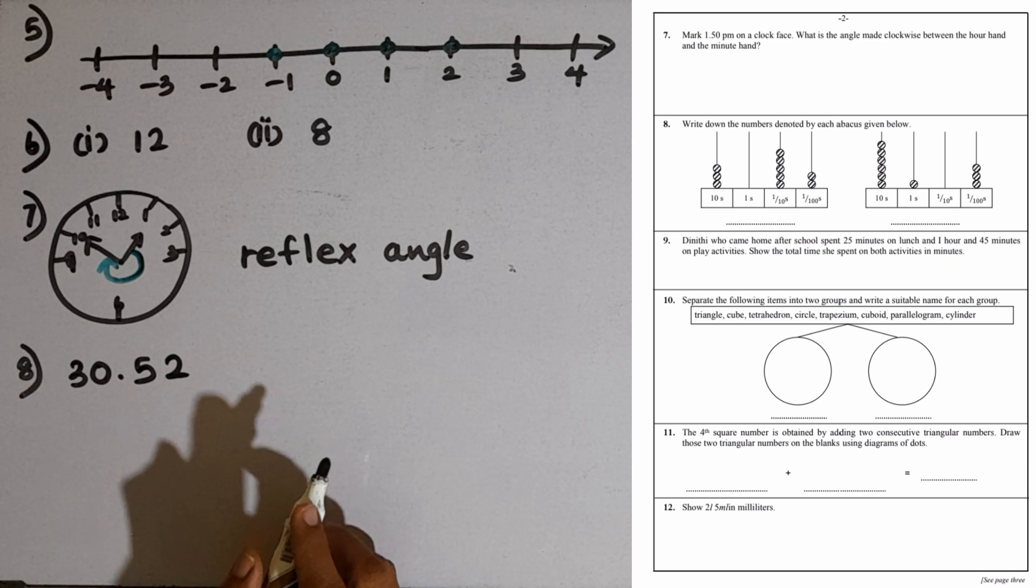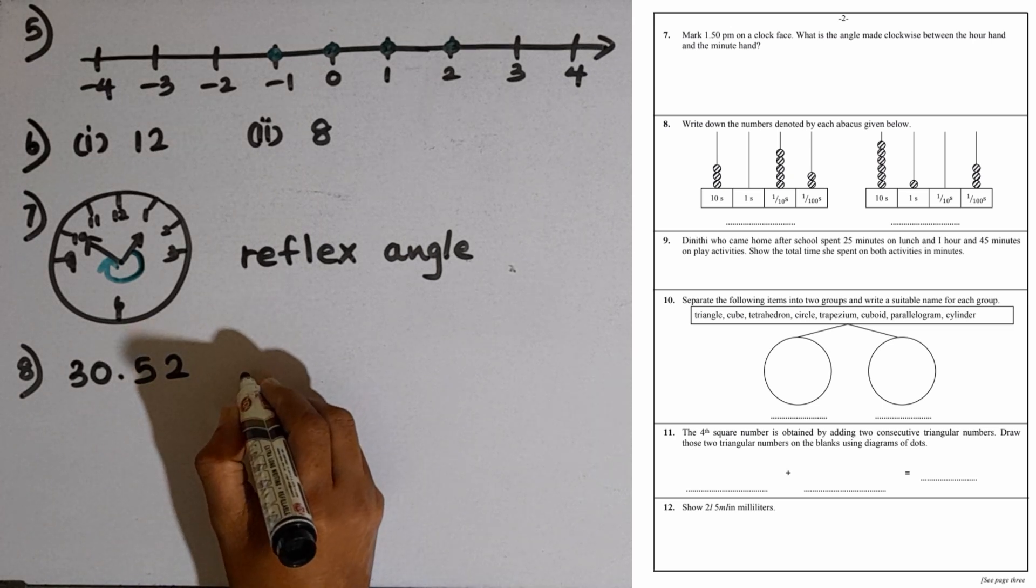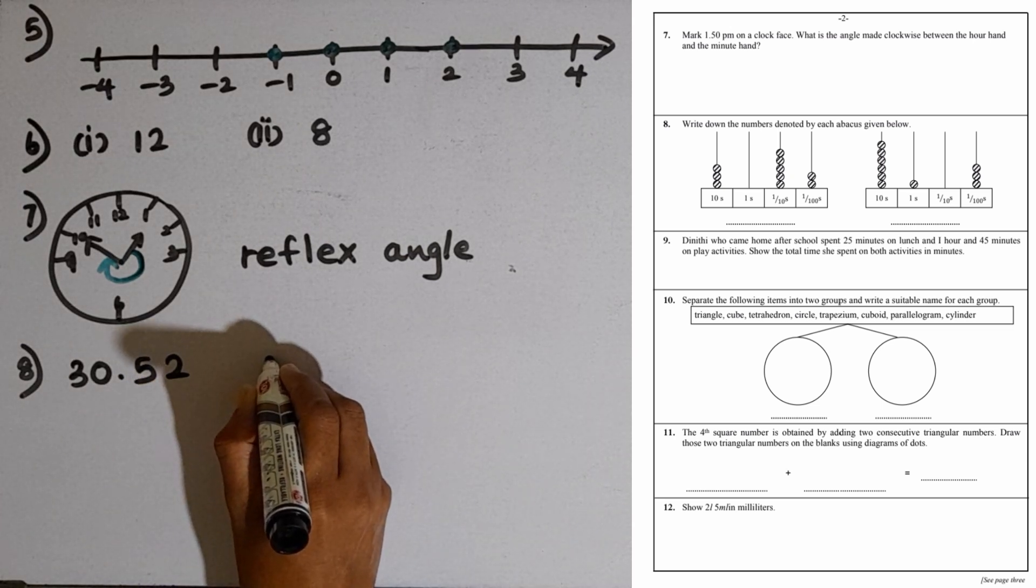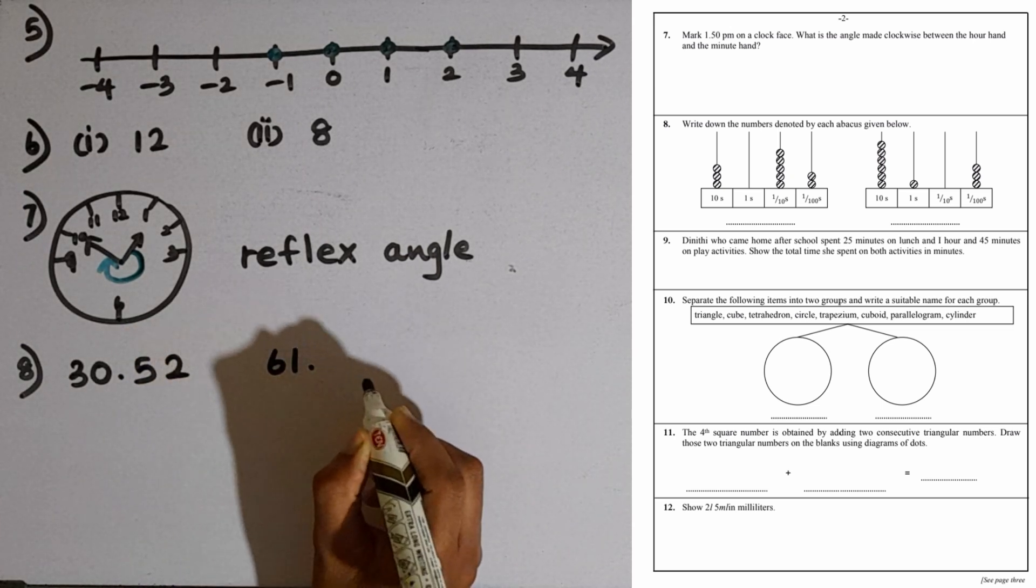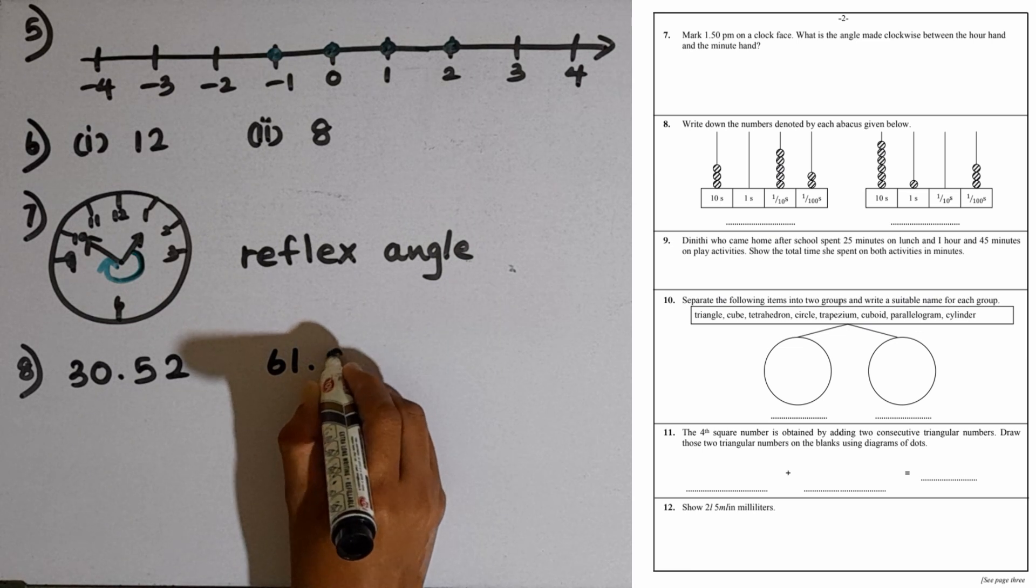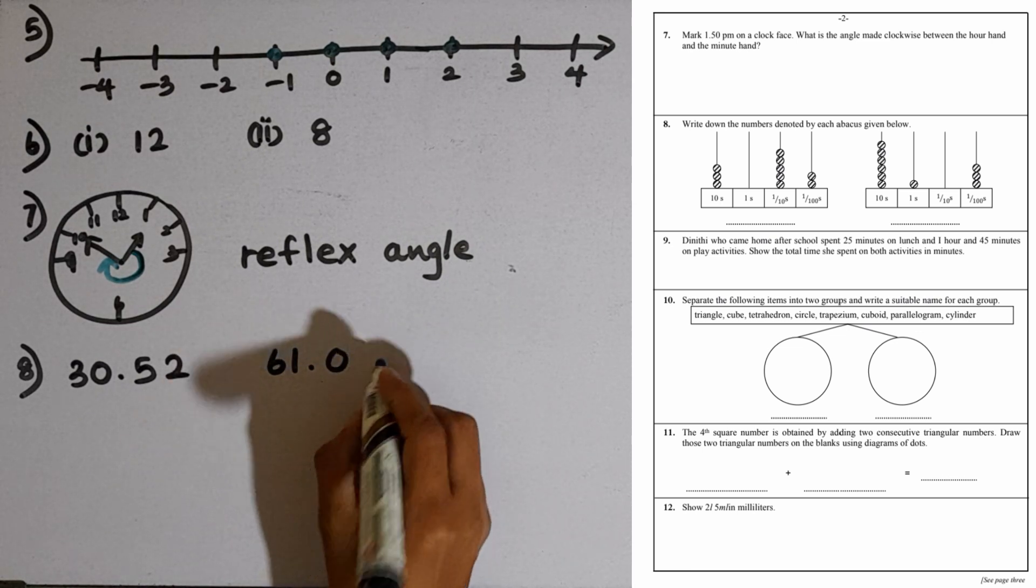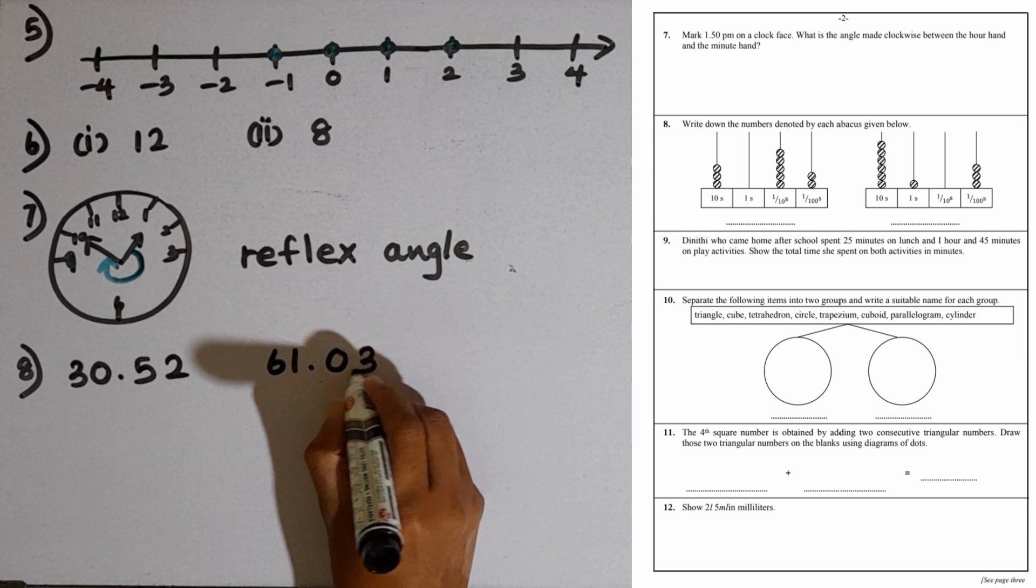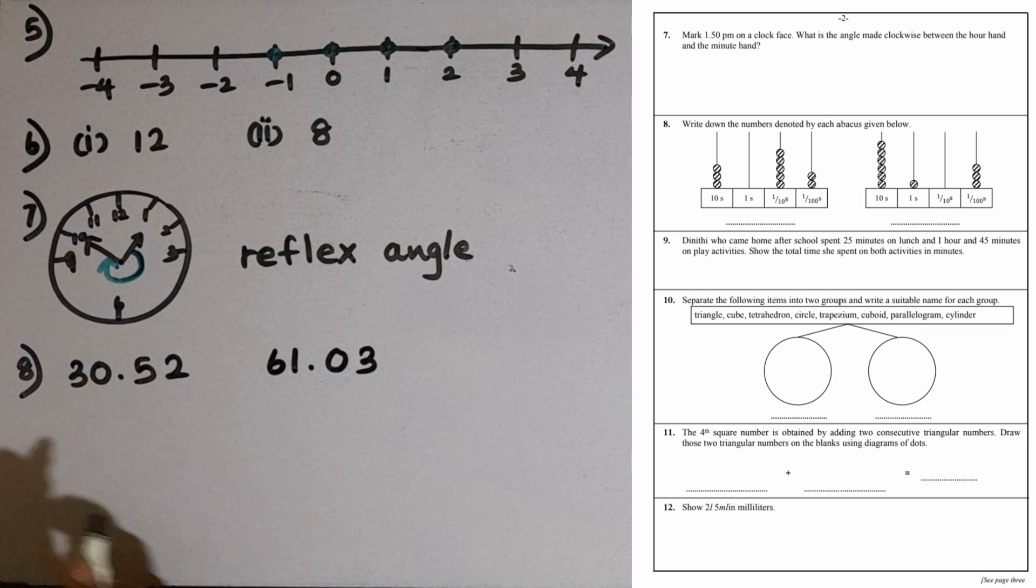In the second abacus, 10th rod has 6 counters, 1st rod 1 counter, so 61 point. Next rod 0 counters, so 0. Last rod 3. These are the two decimal numbers: 30.52 and 61.03.